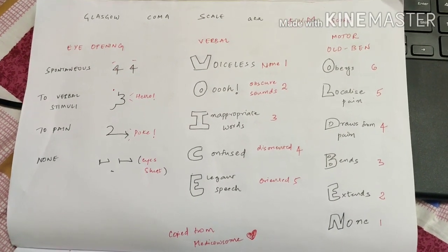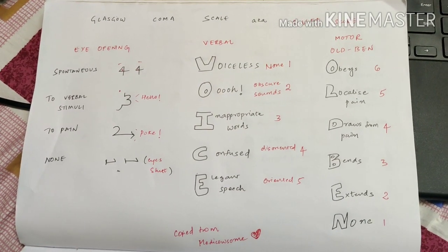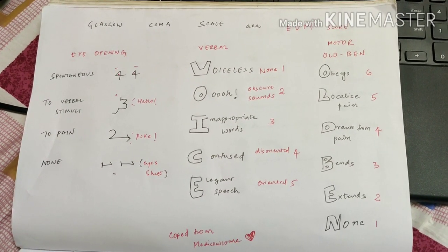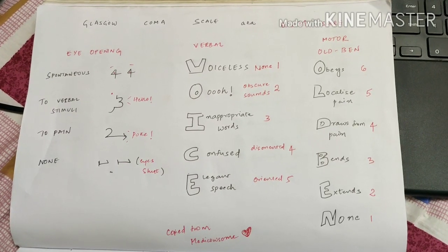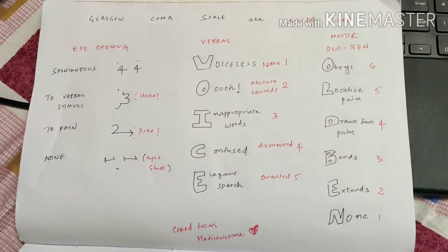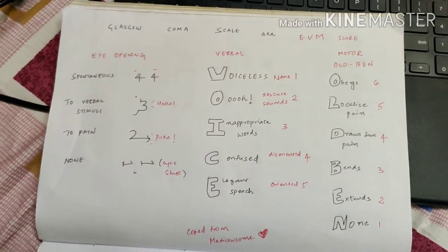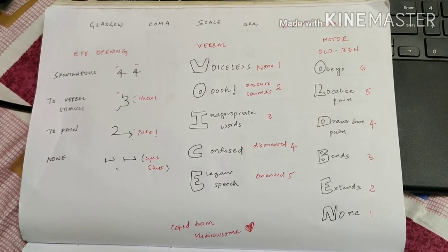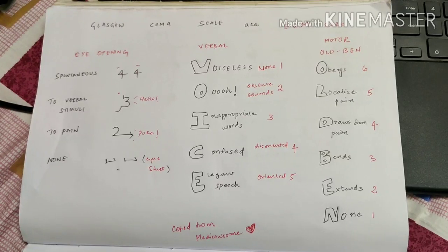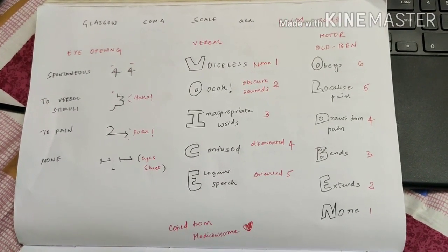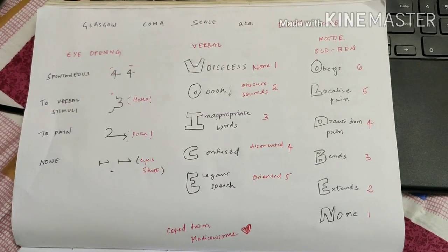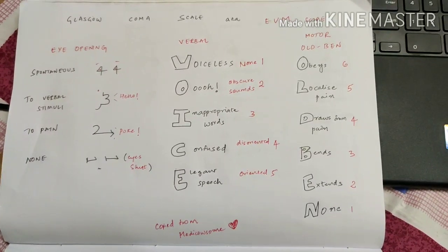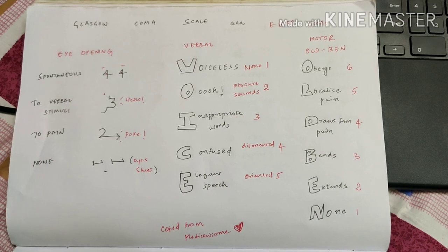This is EVM score, Glasgow Coma Scale. Definitely everyone will come across this question in exams or in your internship, but we'll forget all the time. So I wanted to make a simple mnemonic. I tried many ways but I can't find a better mnemonic than this. Thank you medicosm for this mnemonic. I used it many times and found it helpful all the time, and I solved MCQs very easily even in a hospital setting.